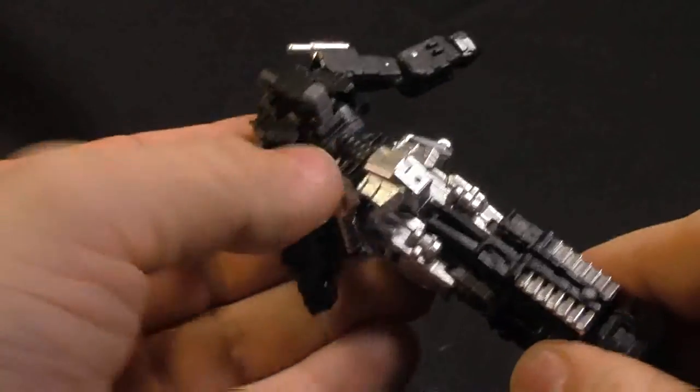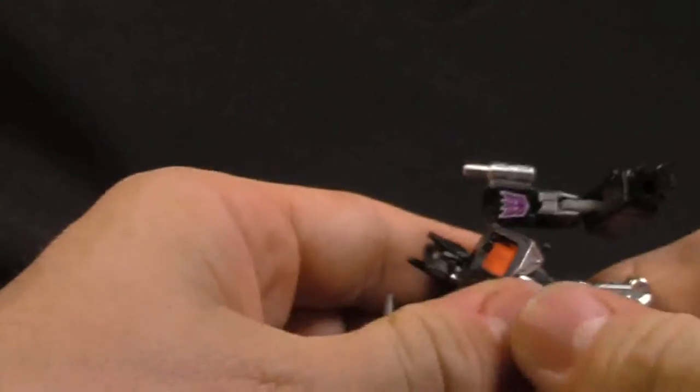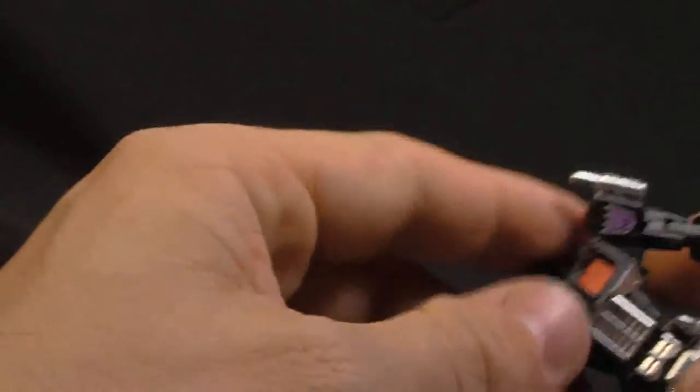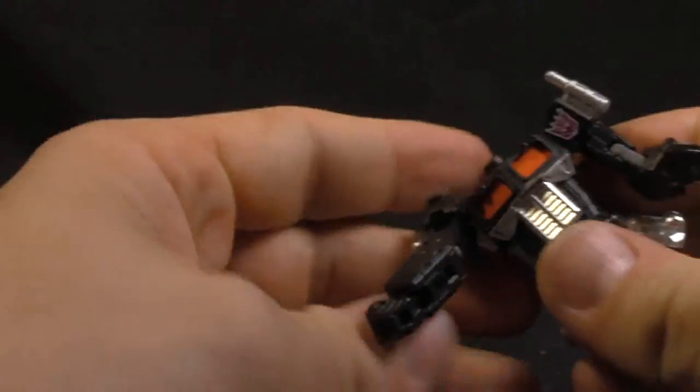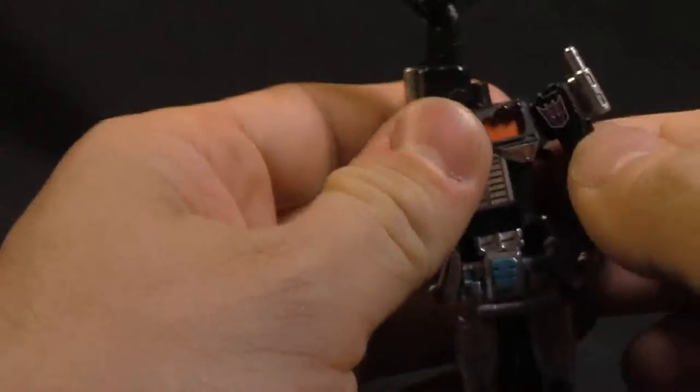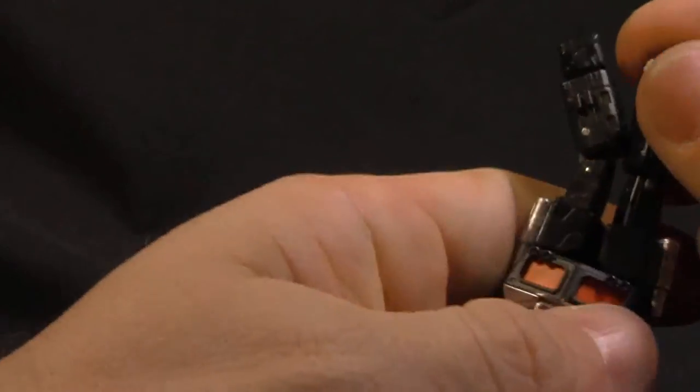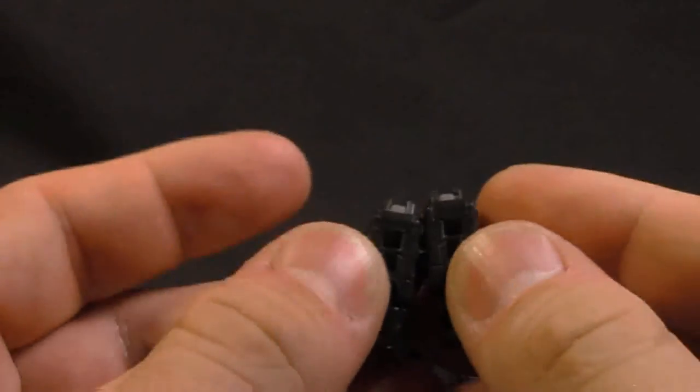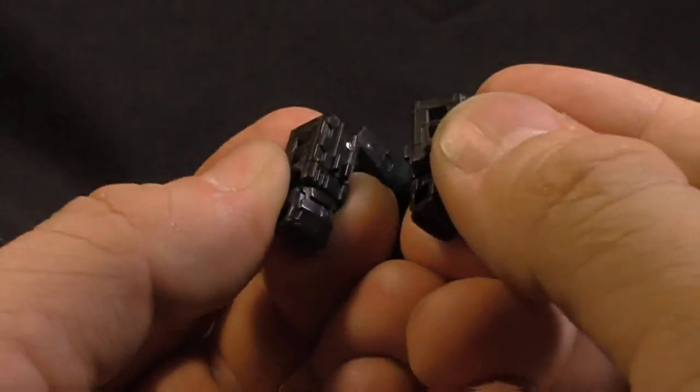And then it allows space for the gun, and then this stuff here. You got to push the head down and bring the arms up. And they will actually tab together I believe.